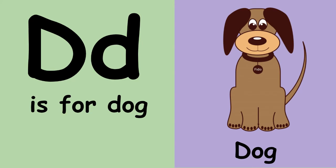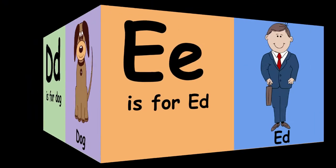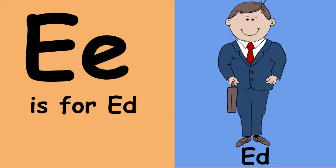D is for dog. D, dog. D. E is for ed. E, ed, eh.